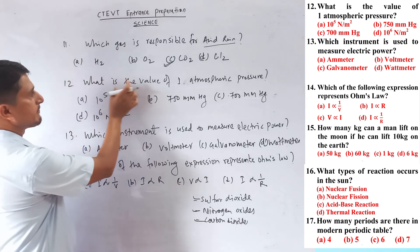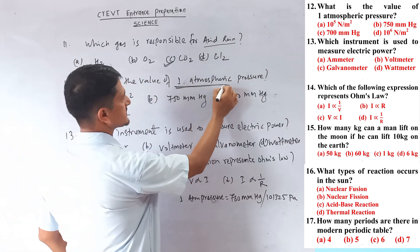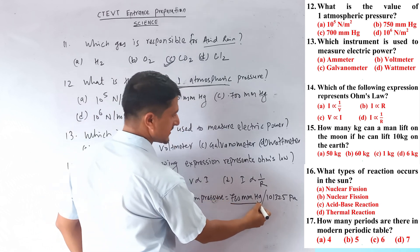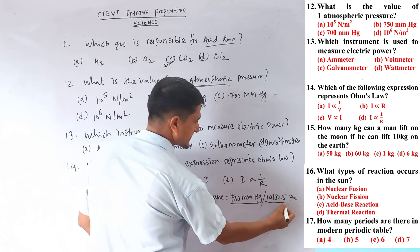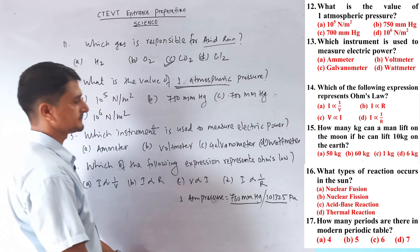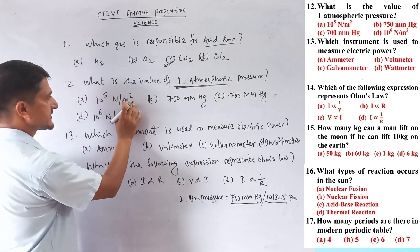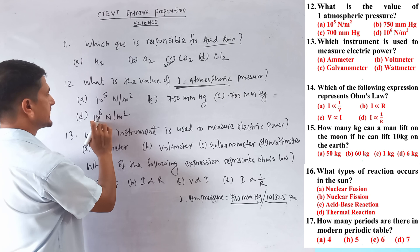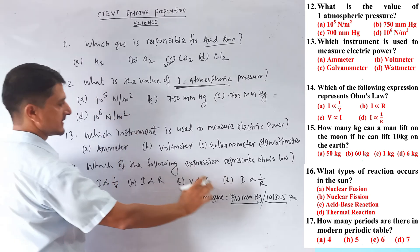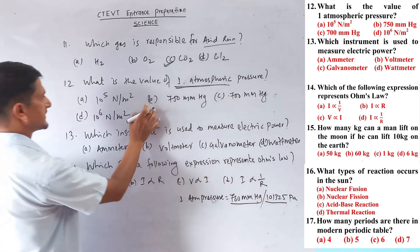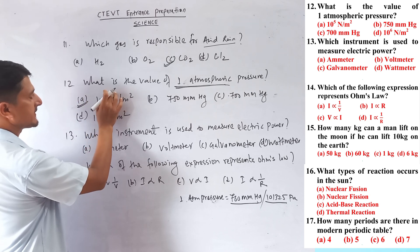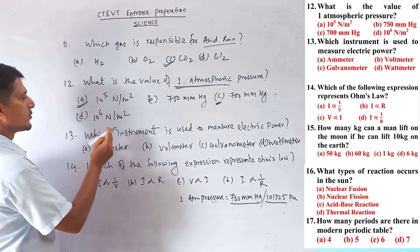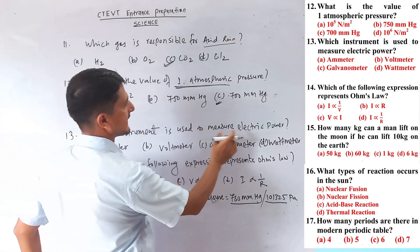Question number twelve: what is the value of one atmospheric pressure? One atmospheric pressure is exactly 760 mmHg. In pascals, this is represented as 1.01325 × 10^5 pascals, or approximately 10^5 newton per meter squared.